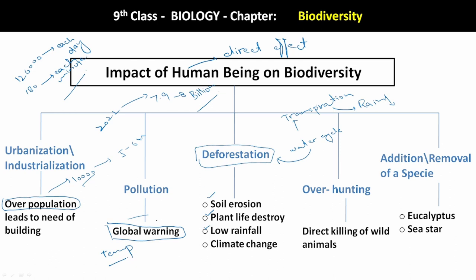Next is climate change. Pollution is increasing global warming, and deforestation is causing low rainfall. In this condition, it has a direct impact on our environment — environment behavior is also changed. Our mausam has been changed; we had 4 seasons, now we only see 2 seasons — one duration is long and one short.